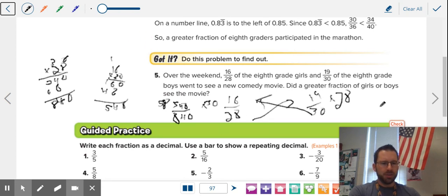It's 548 over 840. We know this is gonna have 840 on the bottom. Then we need to do 19 times 28 over here.